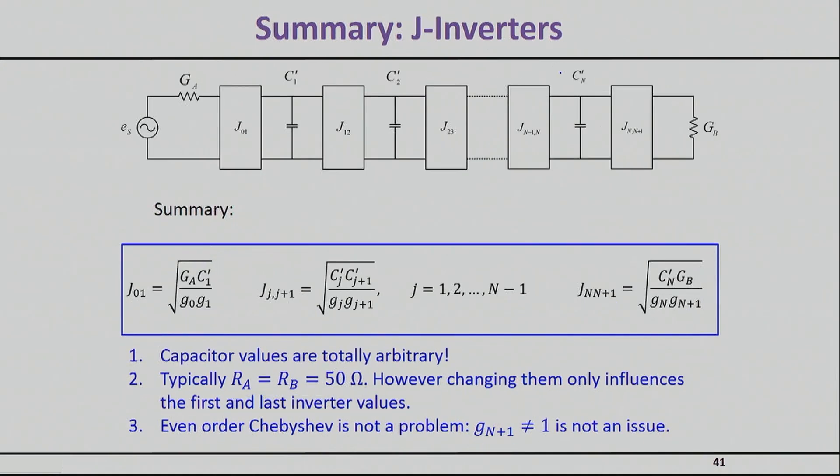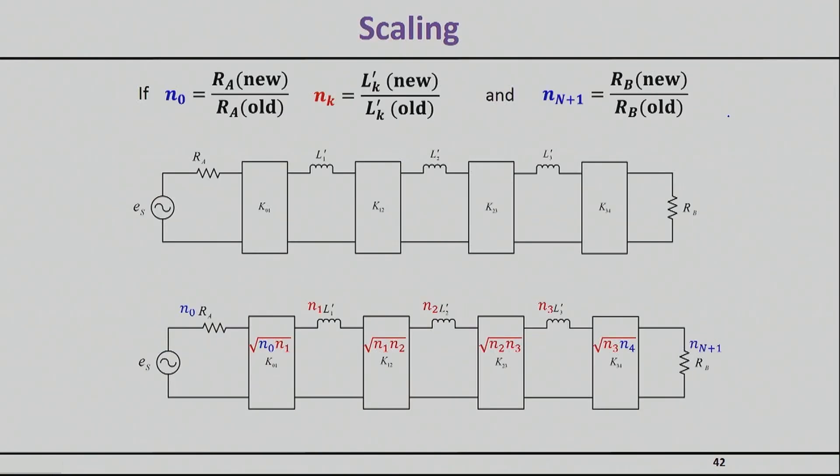If we had chosen to keep our shunt elements and replace the series ones, we would have ended up with exactly the same topology. We still have inverters, but it's more customary to call these admittance inverters, so I'm using the J values. The J values you need are shown here, based on arbitrary capacitance values and your G elements.